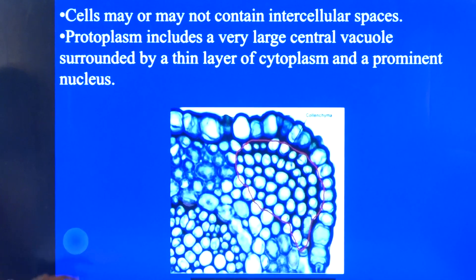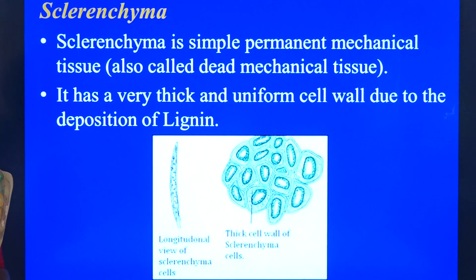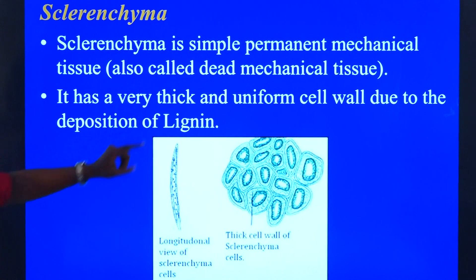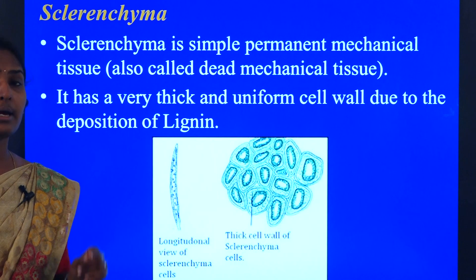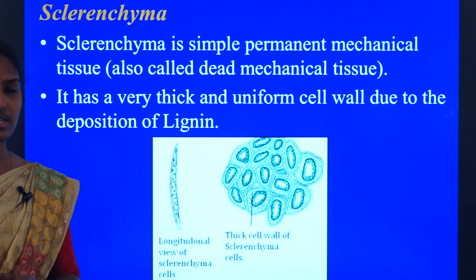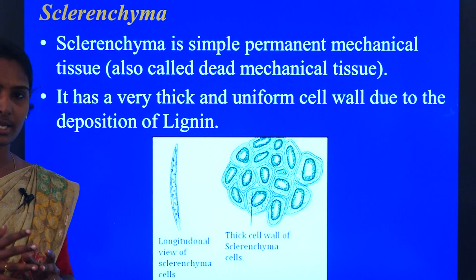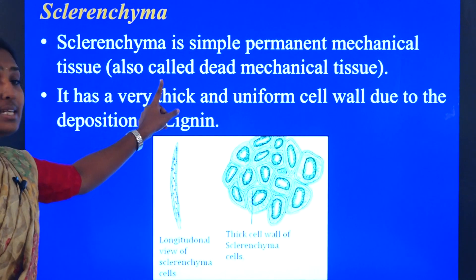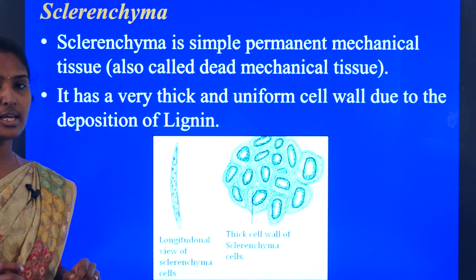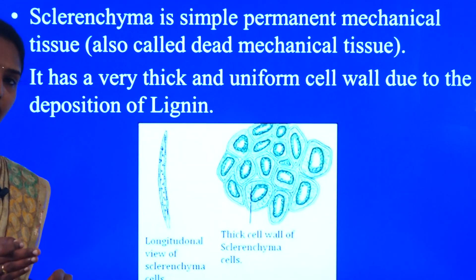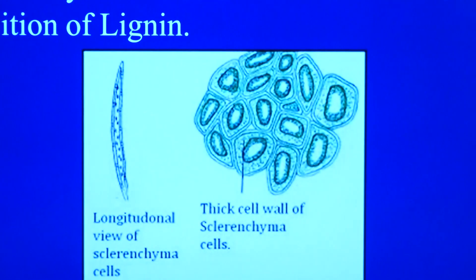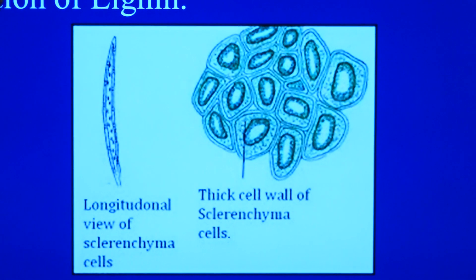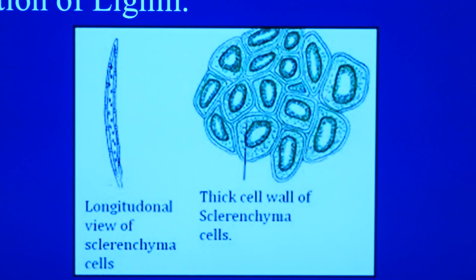Moving on to the next type, that is sclerenchyma. Sclerenchyma is a simple permanent mechanical tissue — this is also helping mainly for the supporting purpose. We call it by another name: dead mechanical tissue. Sclerenchyma will function only after its death. It has a very thick and uniform cell wall due to the deposition of lignin — the cell wall is made up of lignin.